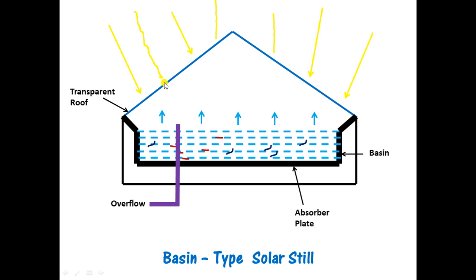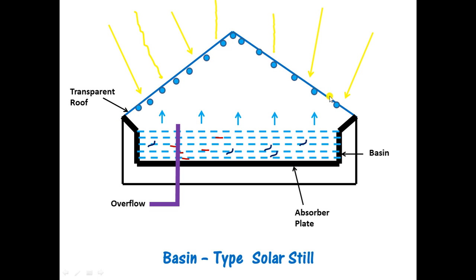When the water vapor molecules reach the roof, they are condensed. As they condense, they start going down the roof and can be collected — water droplets are collected on both sides. In this way, fresh water is obtained from saline water by using solar distillation.